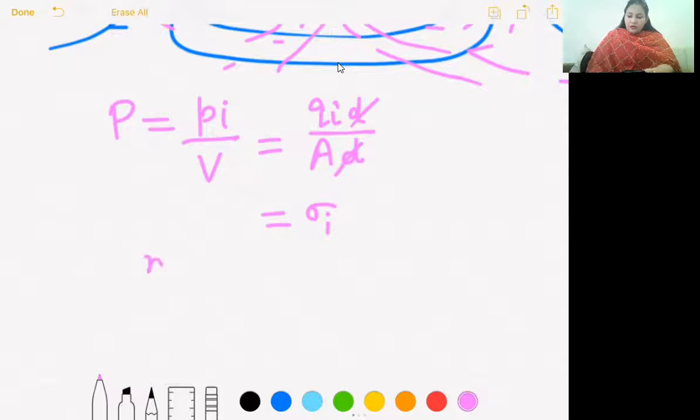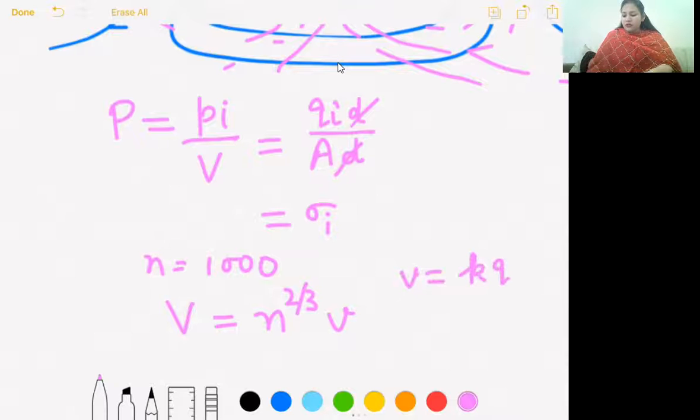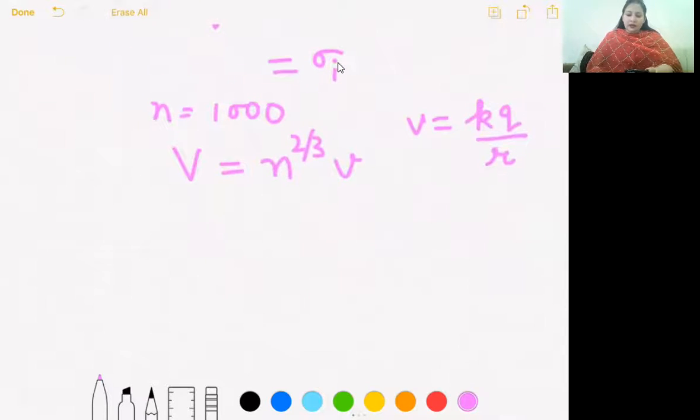There are thousand drops, each of radius one mm and charge one microcoulomb, coalesce to form a bigger drop. You had to find potential of bigger drop. It was a direct formula: n raised to power two by three times the potential due to small drop. How can you find potential due to a small spherical drop? Using the very basic formula of potential: kq by r, one over four pi epsilon naught q by r.